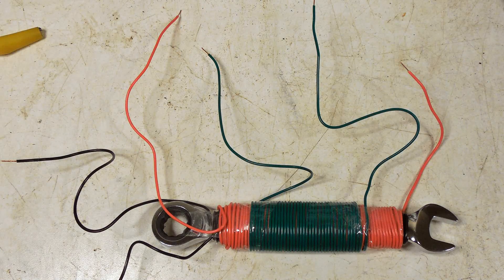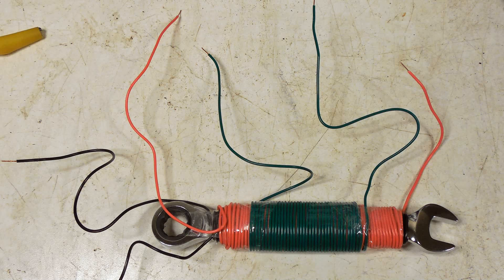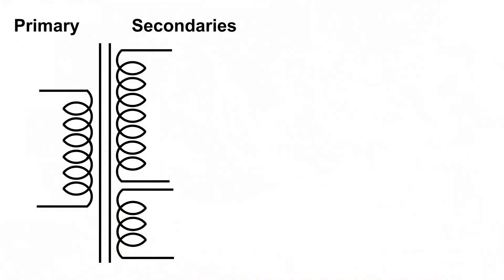Now I have wound another coil over all the other coils, which is another secondary coil, with not as much wire. This is what the diagram for that transformer looks like now. We've got a primary and two secondaries. The upper secondary has more wire than the lower secondary.